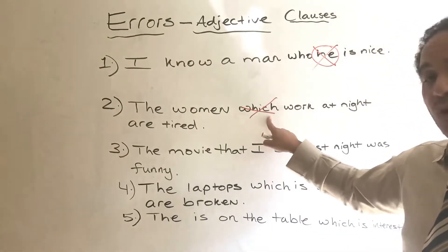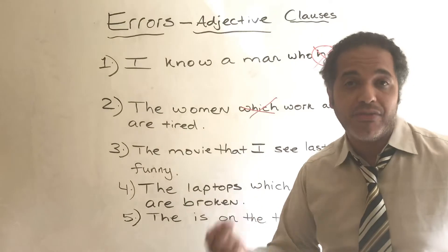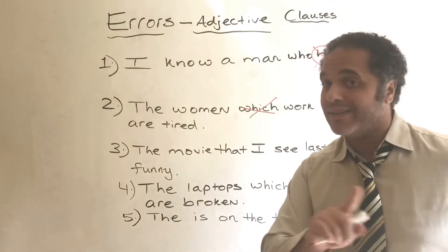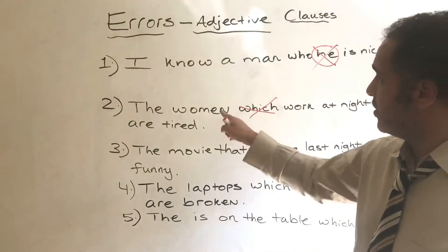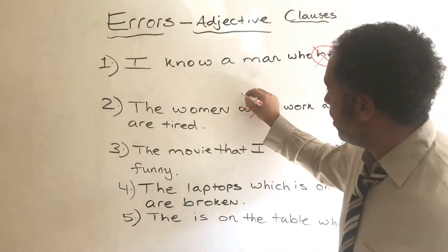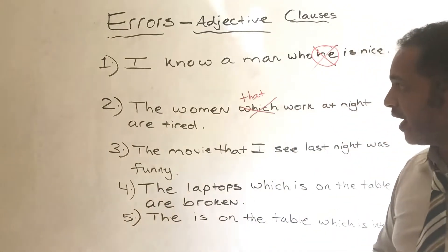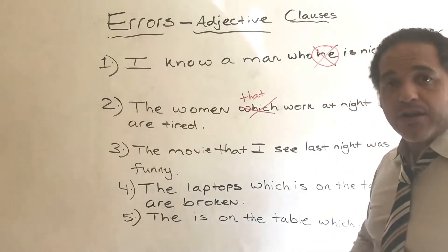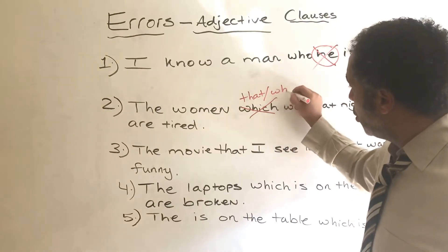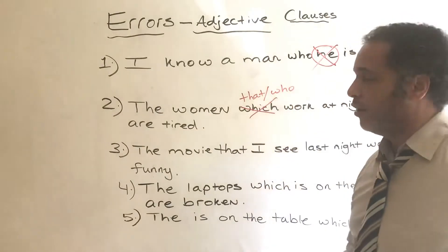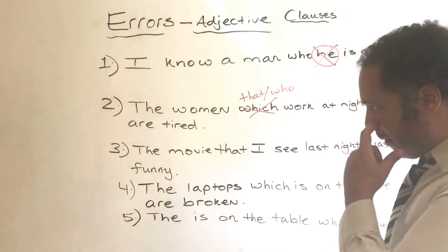Remember, we only use 'which' if we are talking about things, not people. So this one I can say 'the women that work at night are tired,' or you can also use 'who work at night are tired.' You can use both of them.